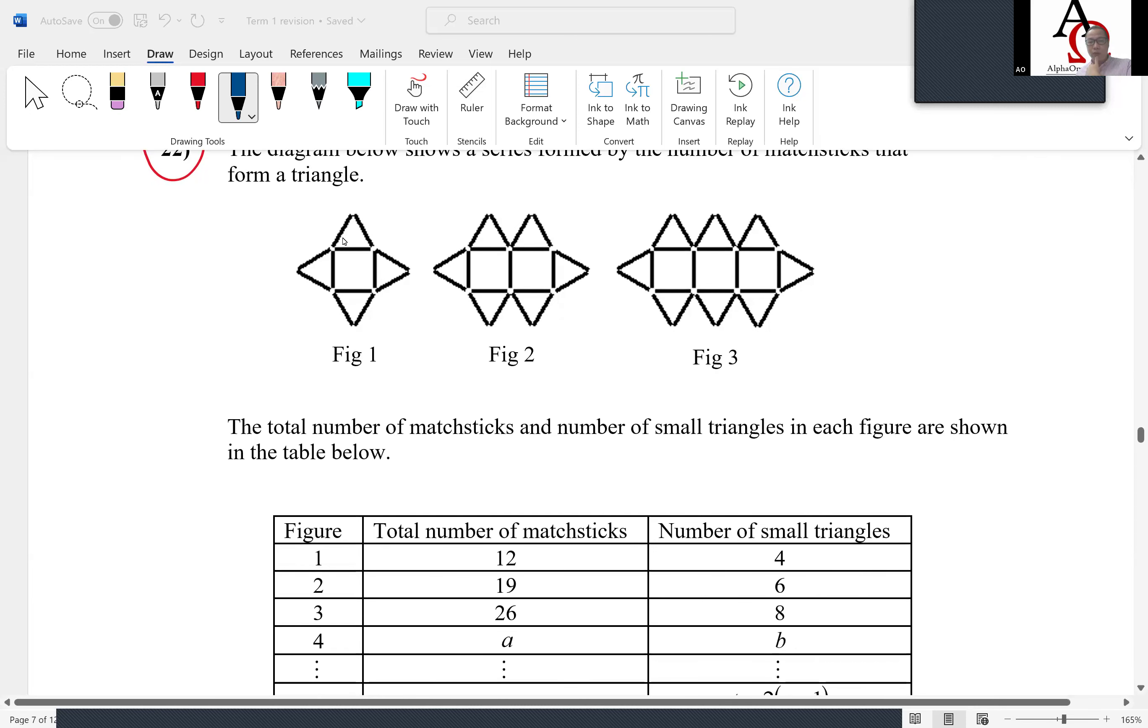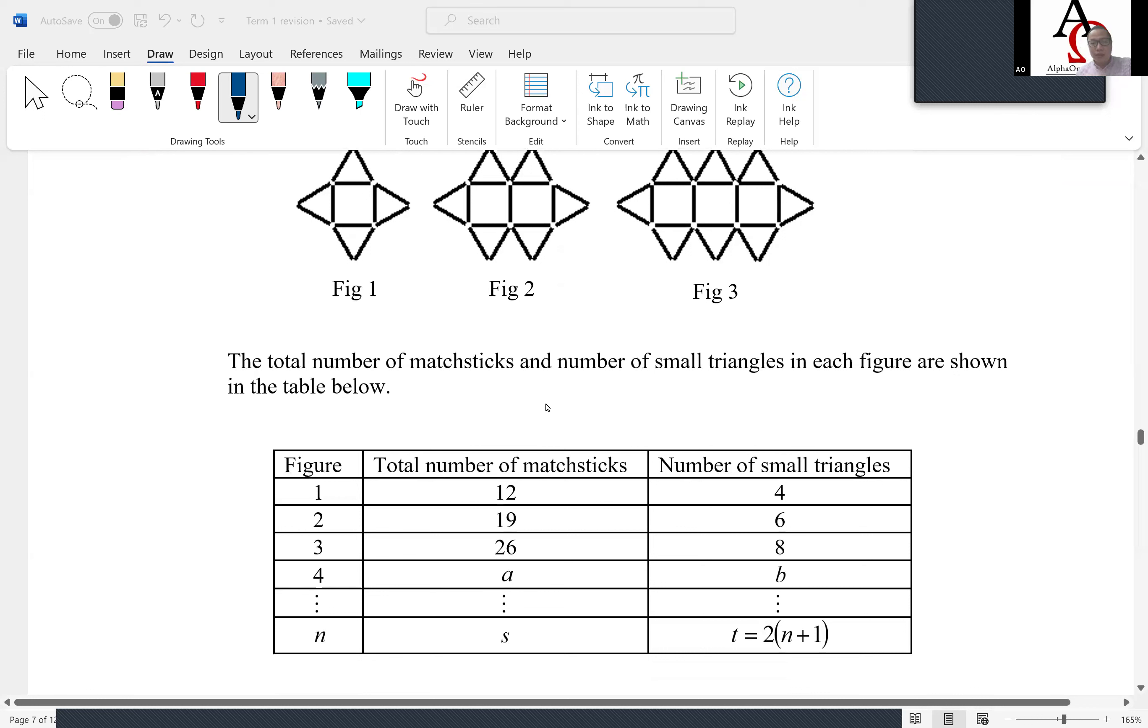So figure one, 12 matchsticks, you can form four small triangles. Figure two, 19 matchsticks, six triangles, and so on and so forth. But what is the pattern that we are more concerned with? It's a common difference, isn't it? Plus seven throughout.